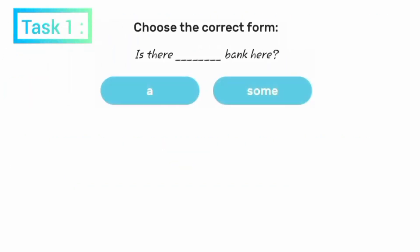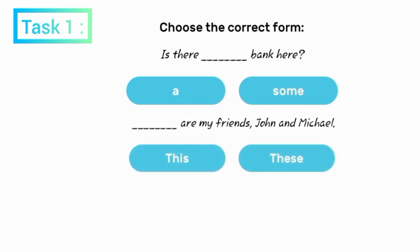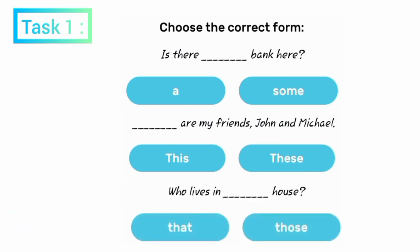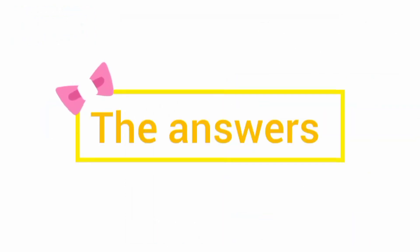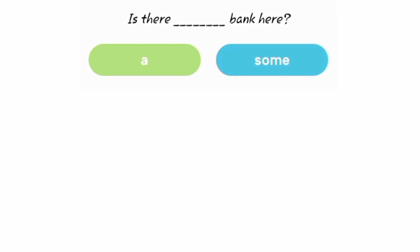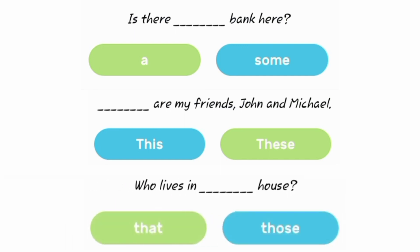Task one: choose the correct form. Is there a or some bank here? These or those are my friends John and Michelle. These are my friends John and Michelle. Who lives in that house?